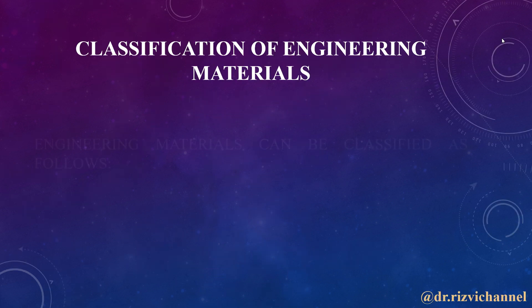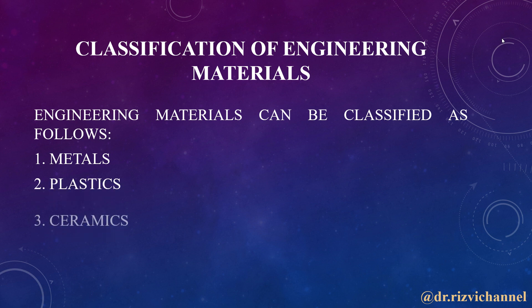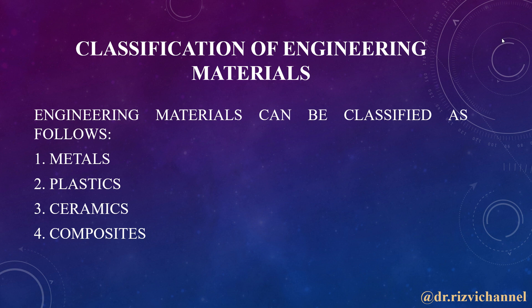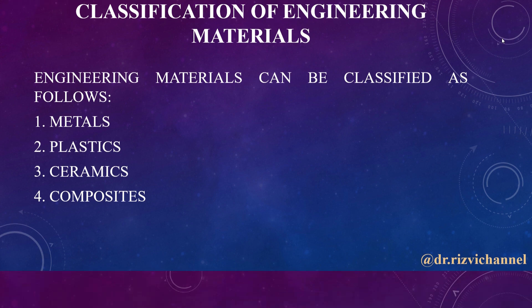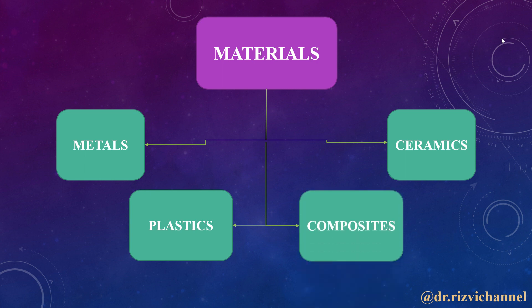The classification of engineering materials can be done in the following 4 categories: metals, plastics, ceramics, and composites. These are the 4 broad classification areas of engineering materials, and the flowchart can be given as shown here.